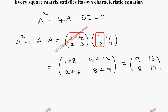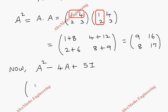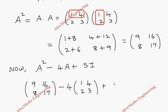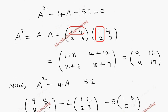Now we are going to simplify A squared minus 4A minus 5I. For A squared we take [9, 16; 8, 17], minus 4 times A which is [1, 4; 2, 3], minus 5 times I, where I is the identity matrix [1, 0; 0, 1].